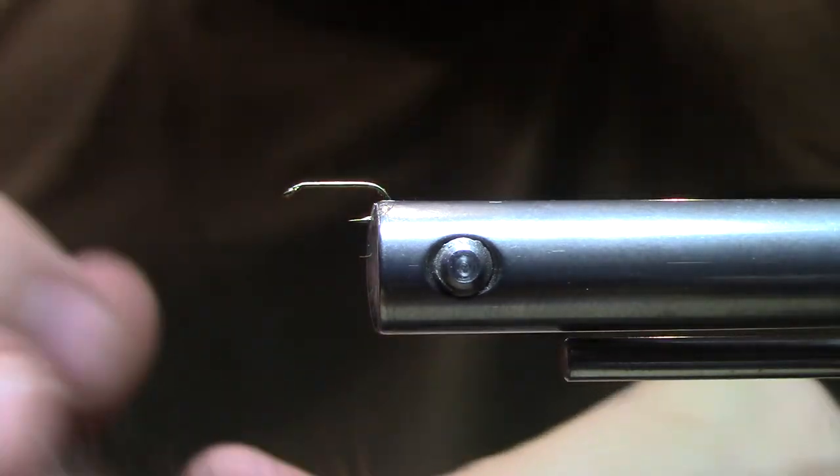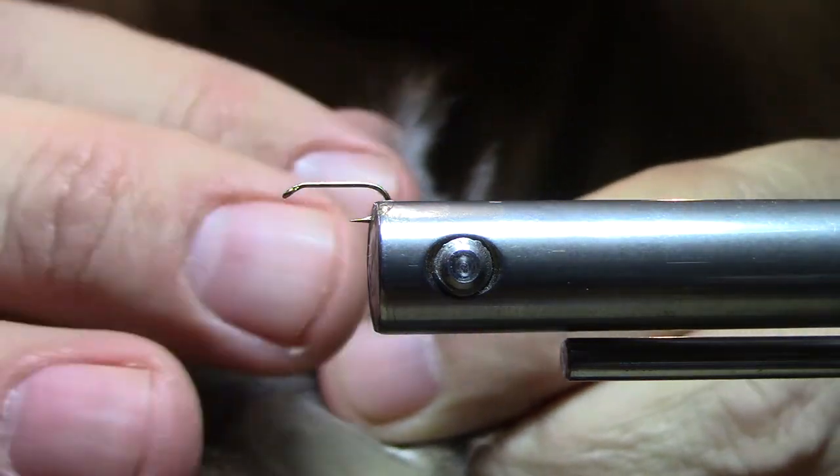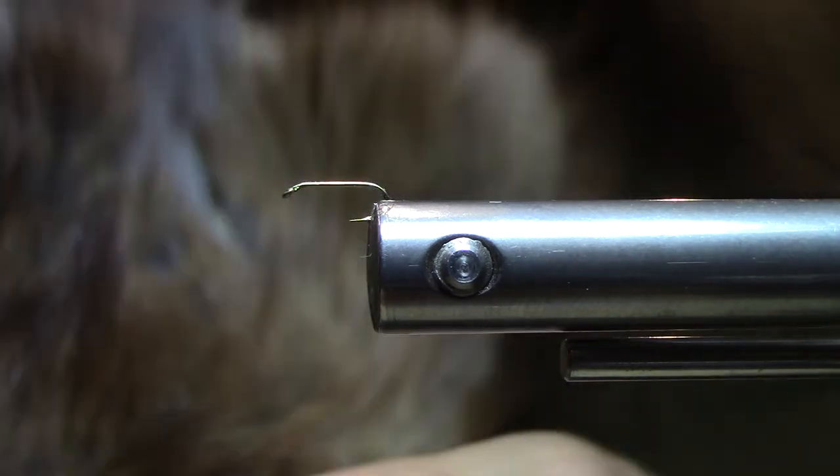Those are useful in a lot of patterns. But what we're interested in is the underfur, which is this very soft, gray, fluffy stuff that's there after you cut away the guard hairs. And that's what we're going to be using as a dubbing on the head of this fly.